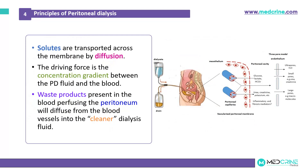Solutes are transported across the membrane by a process known as diffusion. The driving force is the concentration gradient difference between the peritoneal dialysis fluid and the blood. Waste products present in the blood perfuse the peritoneum and then diffuse from the blood vessels into the cleaner dialysis fluid, and are then taken out of the body.